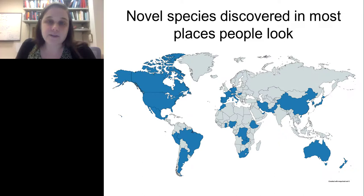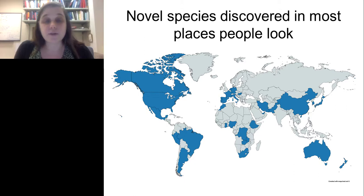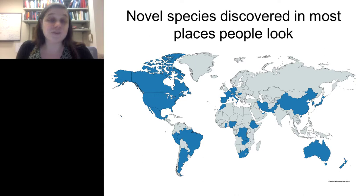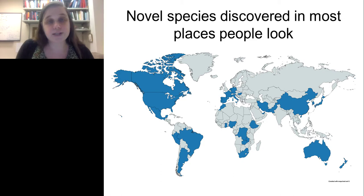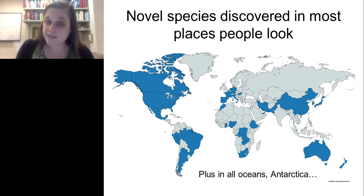We have found CRESS DNA viruses basically everywhere people have looked. This is a semi-exhaustive literature search over the last ten years of locations where completely novel species of CRESS DNA viruses have been found — places where something very different from anything previously known was discovered. While land masses are colored in here, the Tara Oceans project has been invaluable. We found CRESS DNA viruses in Antarctica and elsewhere. Every place we look, we find some, and we keep finding a lot of novelty.